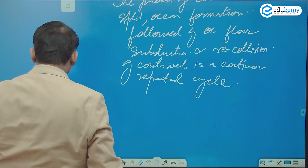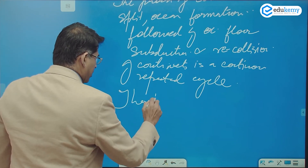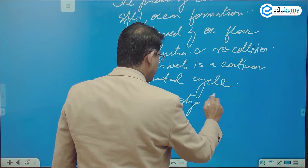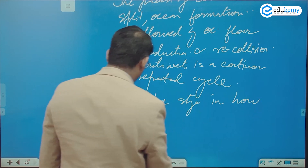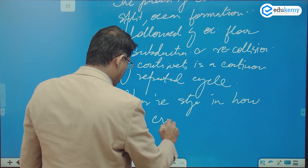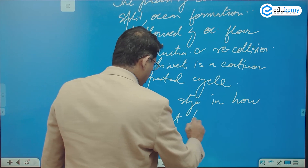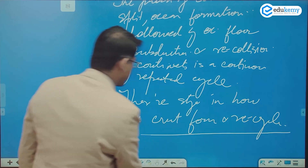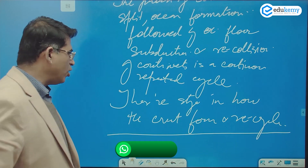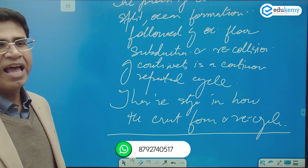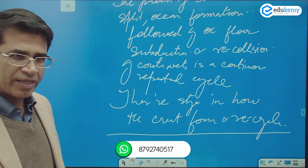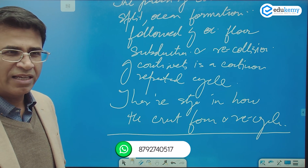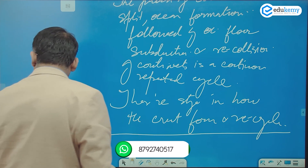There are stages in how the crust forms and recycles. These stages describe the complete sequence from continental breakup through ocean formation to eventual reassembly.